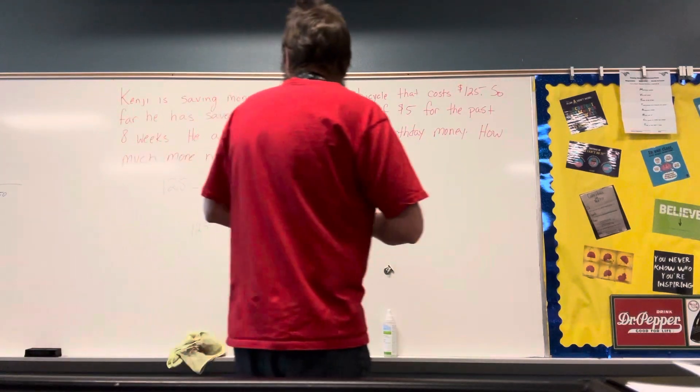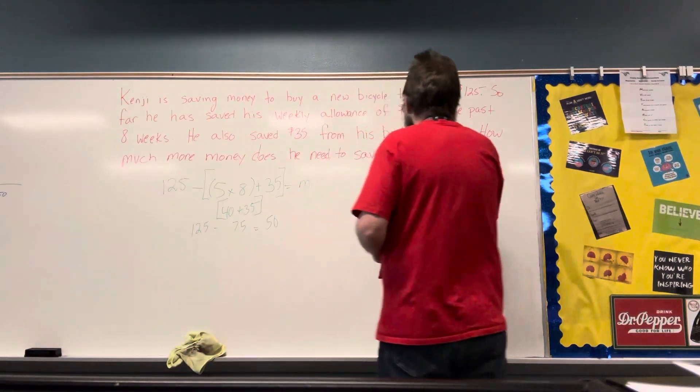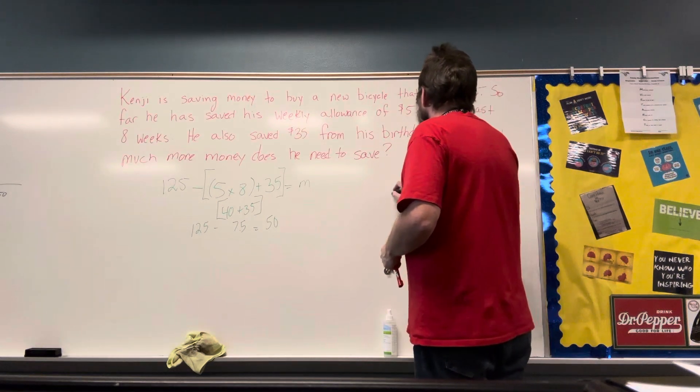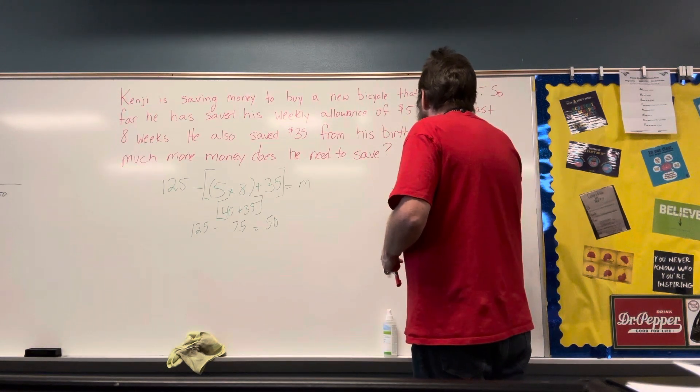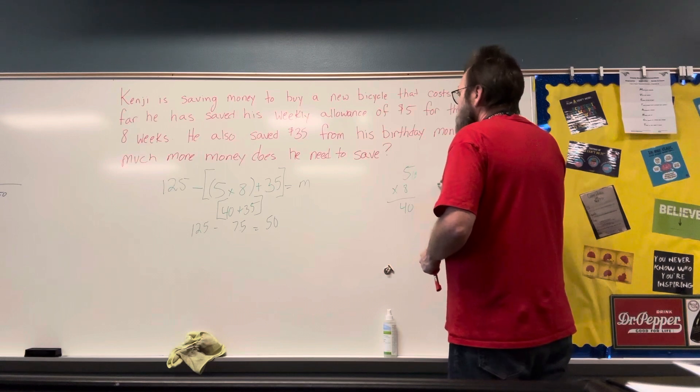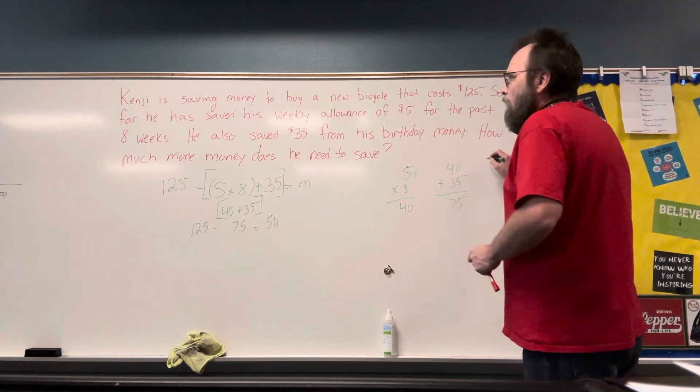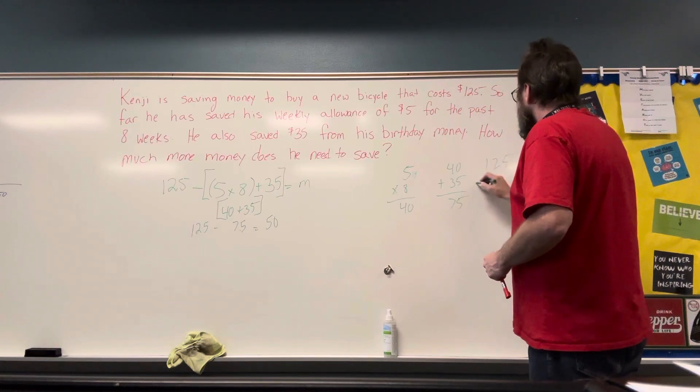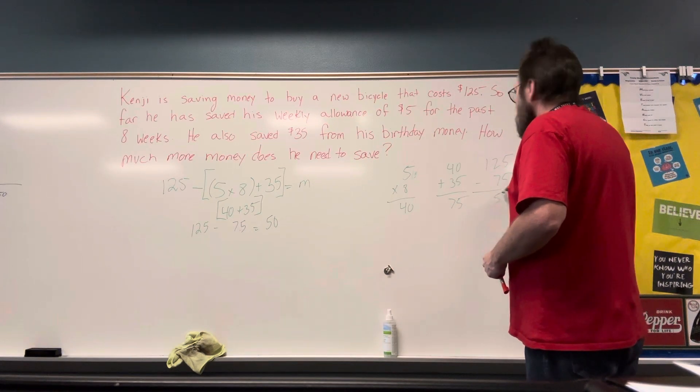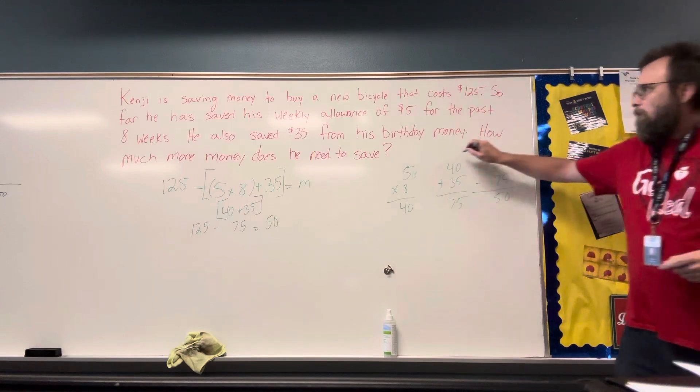And I guarantee you, most of you did, let's see, 5 times—you did 5 times 8 was 40. You did 40 plus 35 is 75, and then you did 125 minus 75 equals 50. That's the way most of you did it, right?